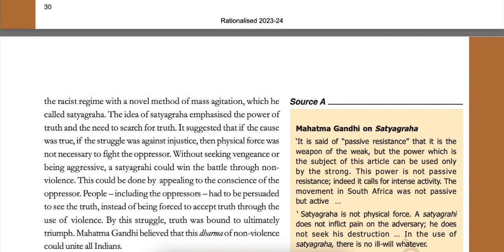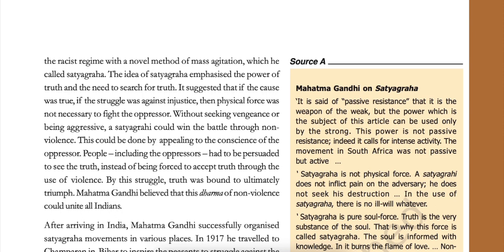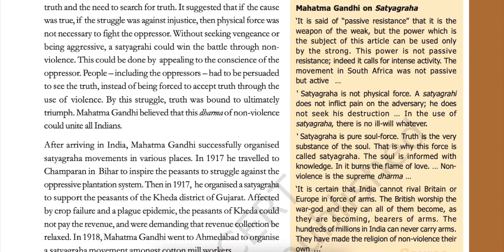The idea of Satyagraha emphasized the power of truth and the need to search for truth. It suggested that if the cause was true, if the struggle was against injustice, then physical force was not necessary to fight the oppressor. Without seeking vengeance or being aggressive, a Satyagrahi could win the battle through non-violence by appealing to the conscience of the oppressor. People, including the oppressors, had to be persuaded to see the truth instead of being forced through violence. By this struggle, truth was bound to ultimately triumph. Mahatma Gandhi believed that this dharma of non-violence could unite all Indians.